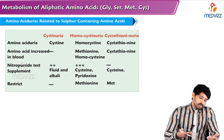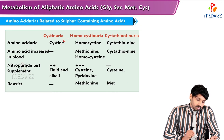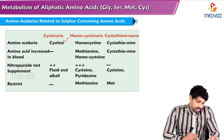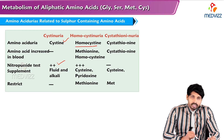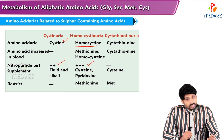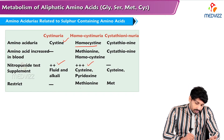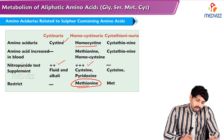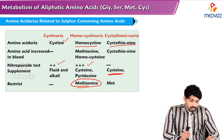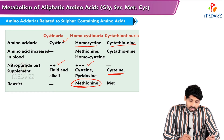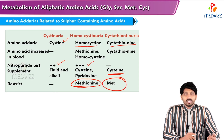In cystinuria: cysteine is present in urine, amino aciduria is seen, amino acid levels are not increased in blood, nitroprusside test is positive, and no dietary restriction is needed. In homocysteinuria: homocysteine and methionine are found in urine, nitroprusside test is triple positive, and methionine must be restricted in the diet. In cystathioninuria: cystathionine is increased in urine and blood, nitroprusside test is positive for cysteine, and methionine must be restricted in the diet.